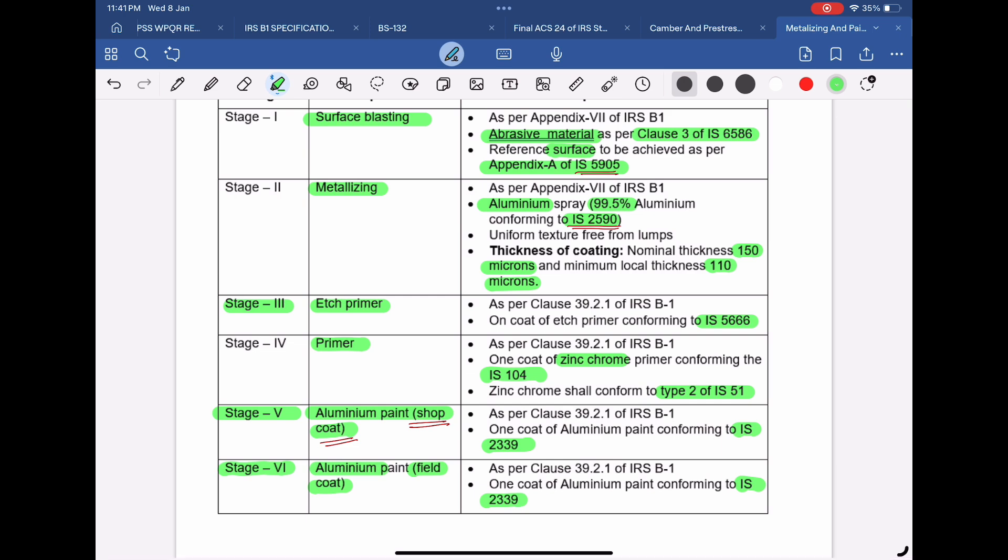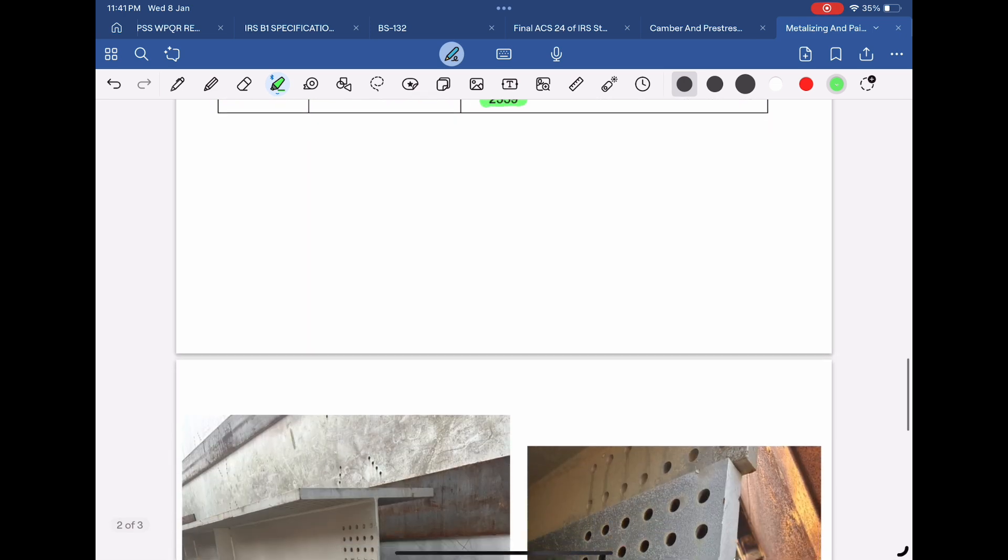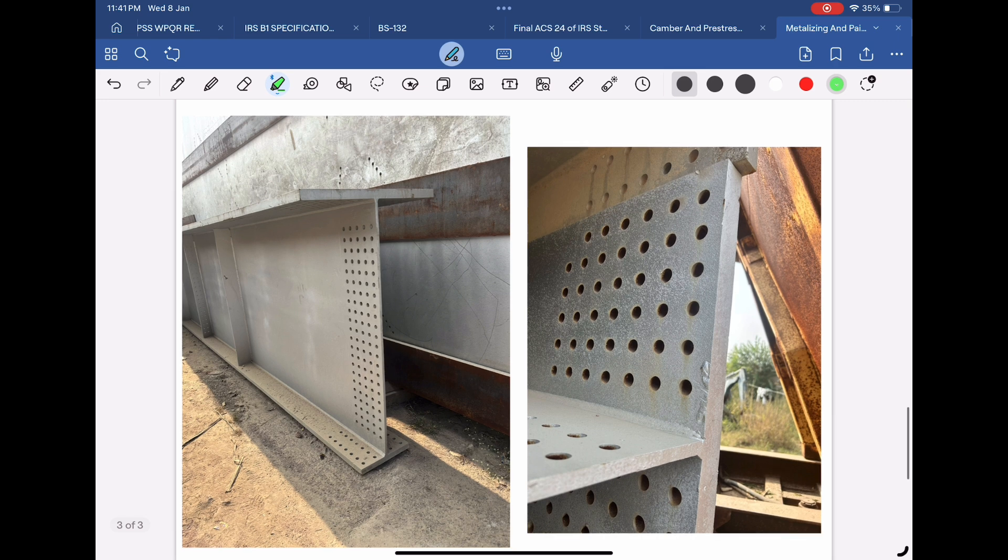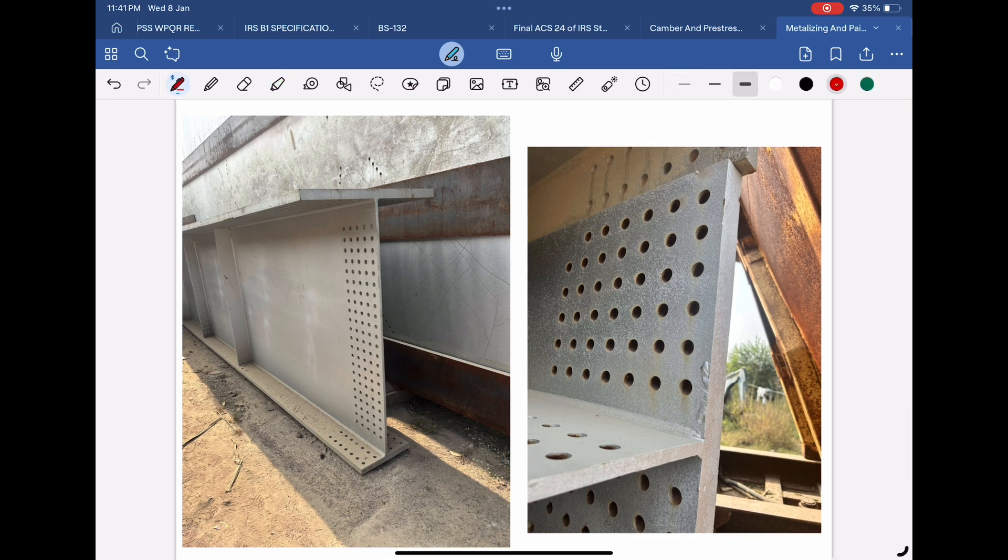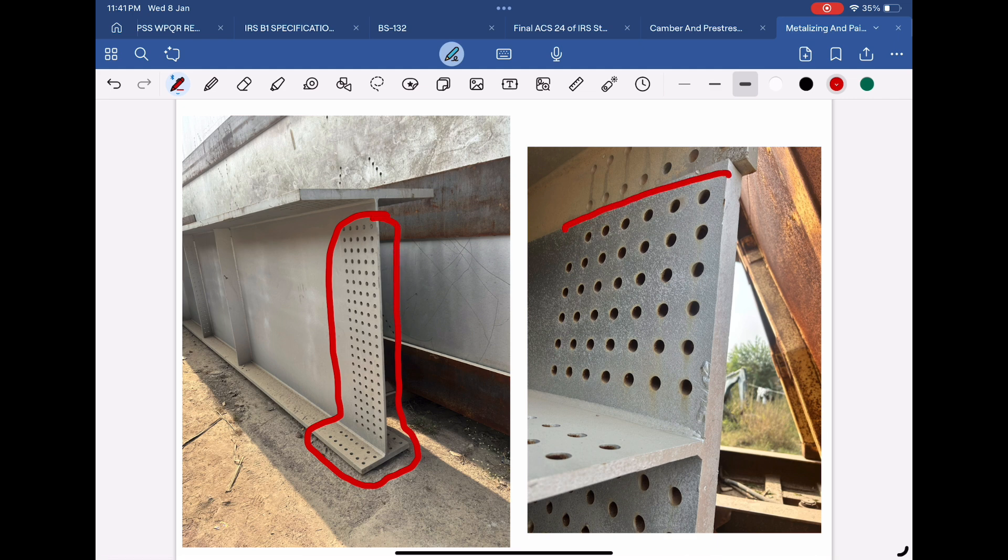It is most important to note that the portion of girders which are to be tightened with HSFG bolts should be treated differently. In order to achieve appropriate slip factor at bolt hole locations, only surface blasting and metallizing should be done. No painting coats after Stage 2 needs to be applied at interface between the plies.